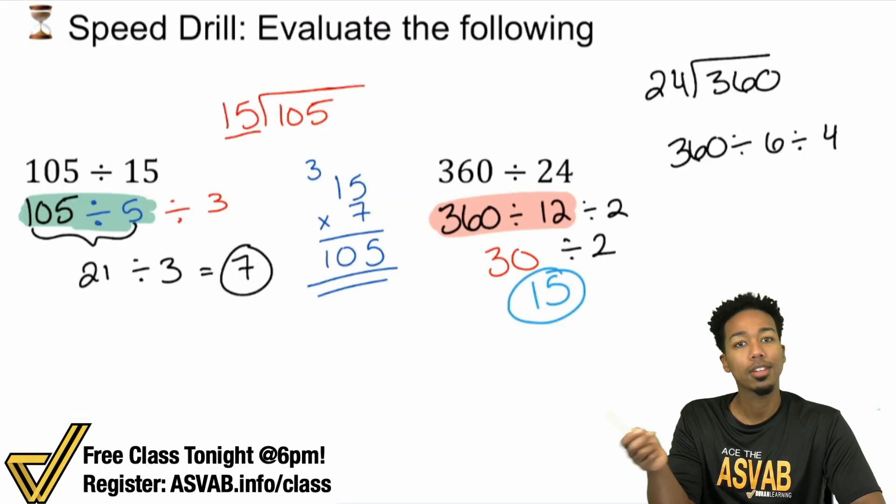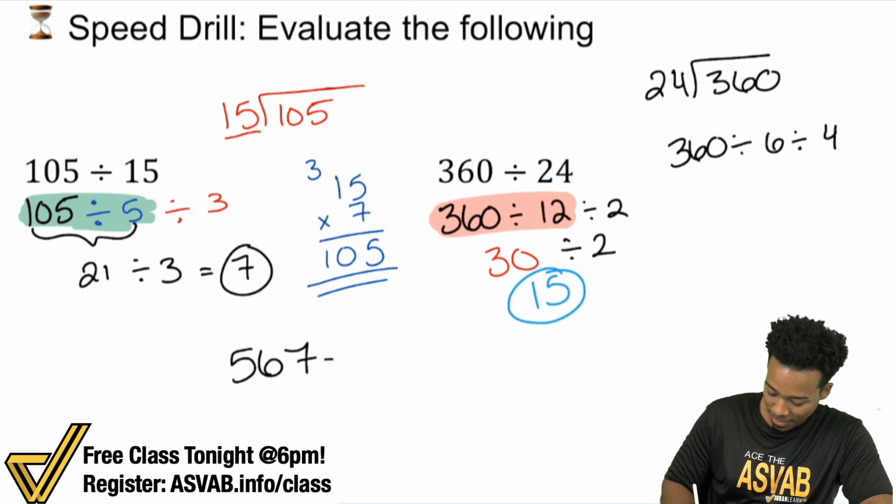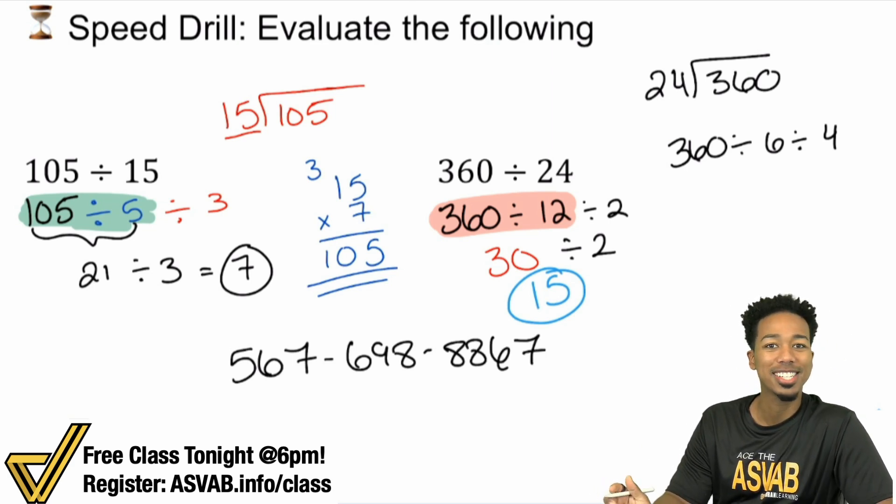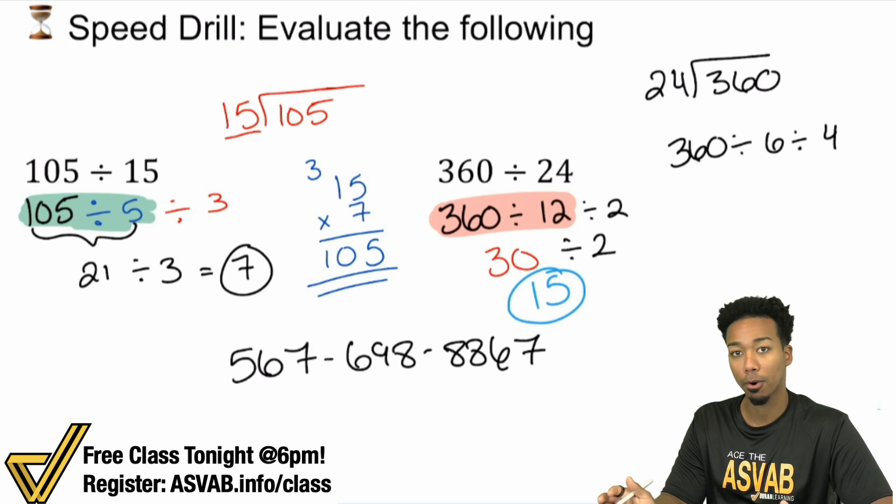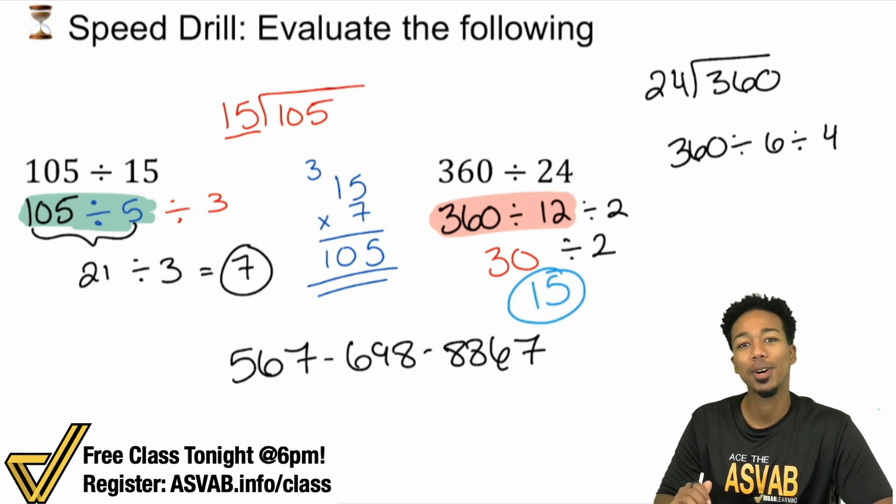If you want to know about my full program, then just feel free to shoot me a text 567-698-8867. That is my personal line. You can go ahead and shoot me a text, letting me know that you're interested in the full program because you saw me on YouTube and me or one of my teammates will go ahead and help you out.